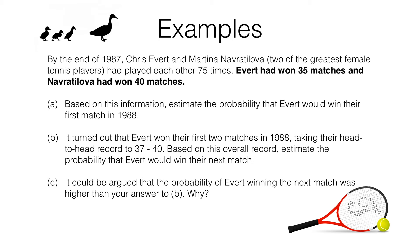In this question, we're given quite a lot of information. By the end of 1987, Chris Evert and Martina Navratilova had played each other 75 times. At that point, Chris Evert had won 35 matches and Martina Navratilova had won 40. In question A, we need to estimate the probability that Evert would win their next match. Evert had won 35 times out of 75, so her relative frequency is 35/75. Without any extra information, that is as good an estimate as we can make — which simplifies to 7/15.